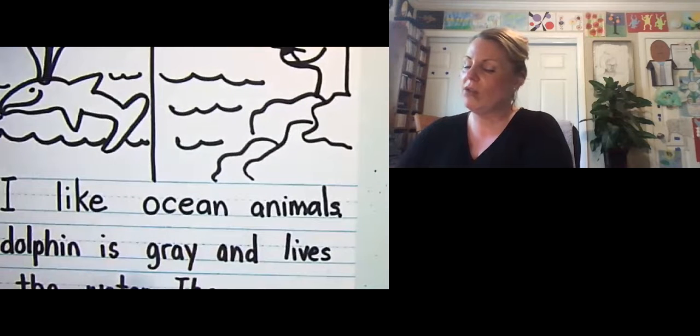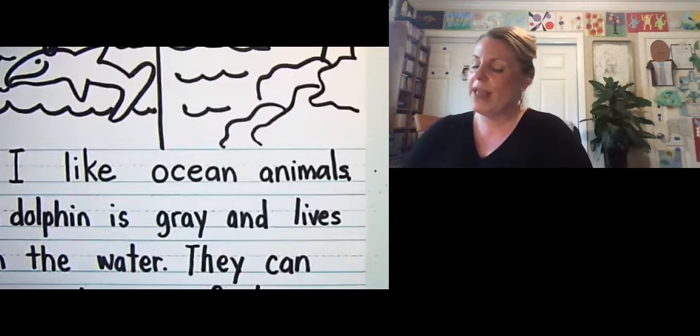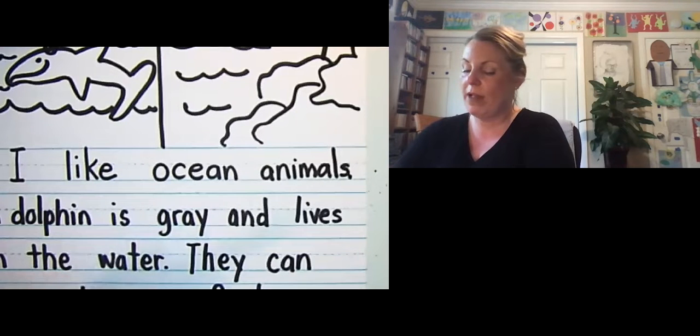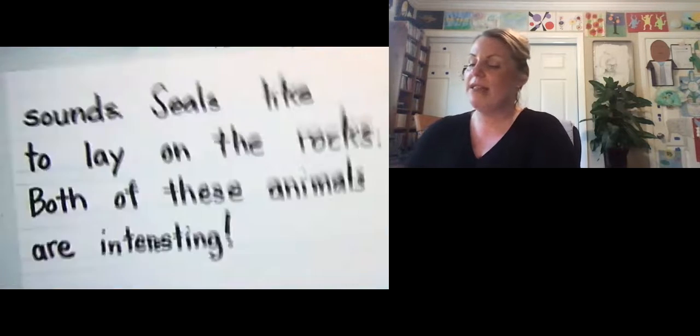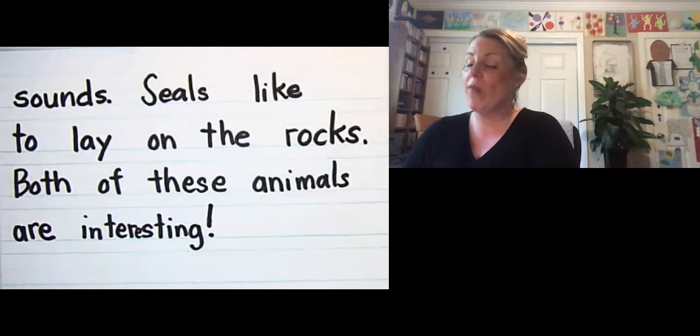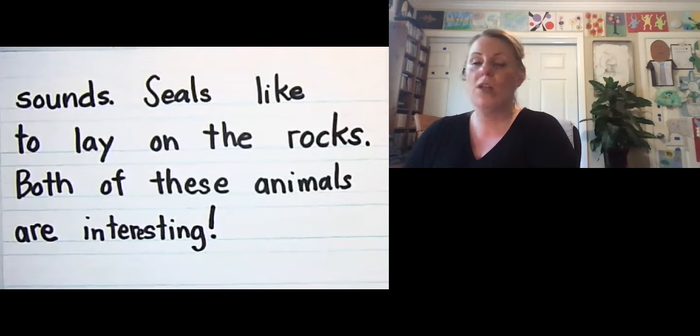Let's look. I like ocean animals. A dolphin is gray and lives in the water. They can jump and swim. Seals are brown. B-R-O-W-N. It's good to go back and look. And make funny sounds. Seals like to lay on the rocks. Both of these animals are interesting. All right.